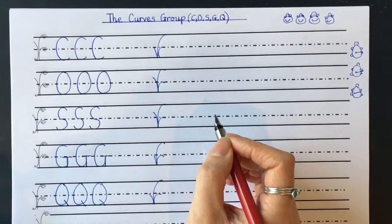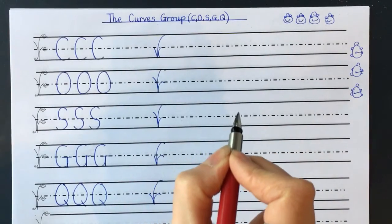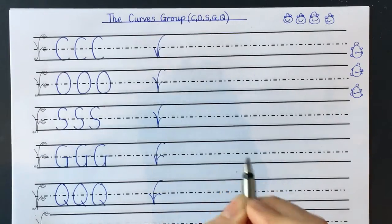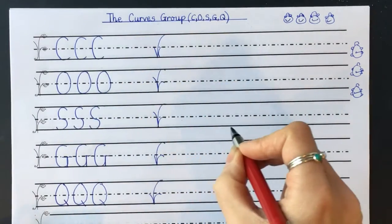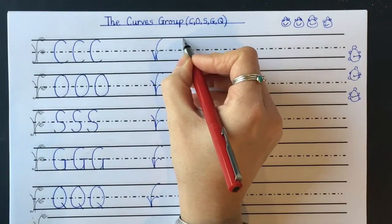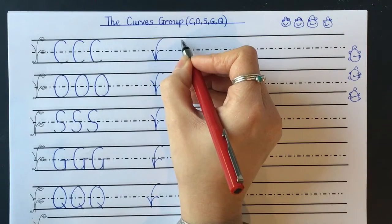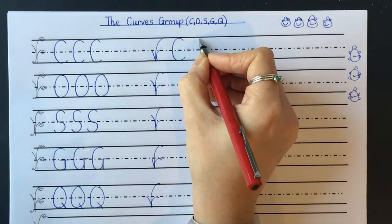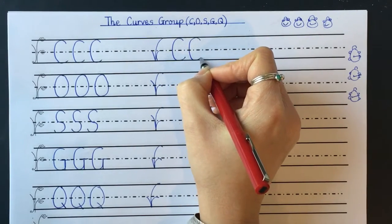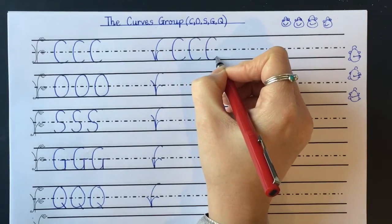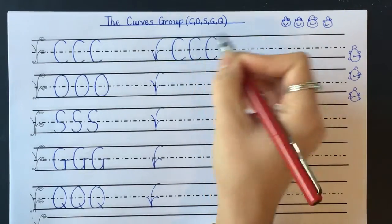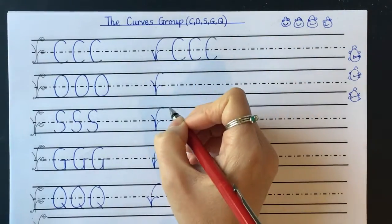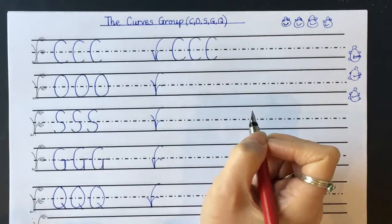Let's do our C first. Shall we do it up in the air first? The rhyme — do you remember it? It was: pull around and push along the ground. Starting here at the brave monkey branch. Pull around and push along the ground. If your pillow finger is still under, give yourself a monkey smile, and if yours look like mine, give yourself a turtle tick. Pause the video now and have a bit more practice if you need to.